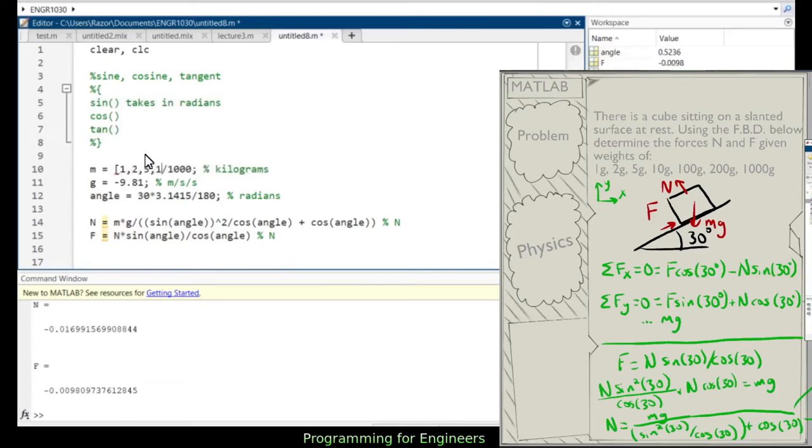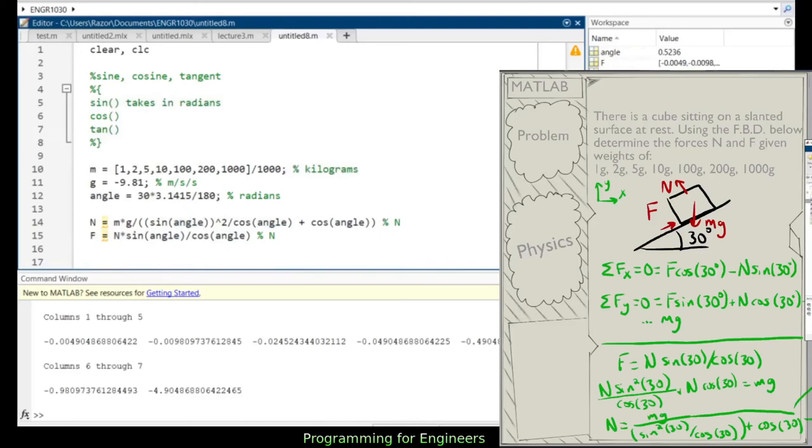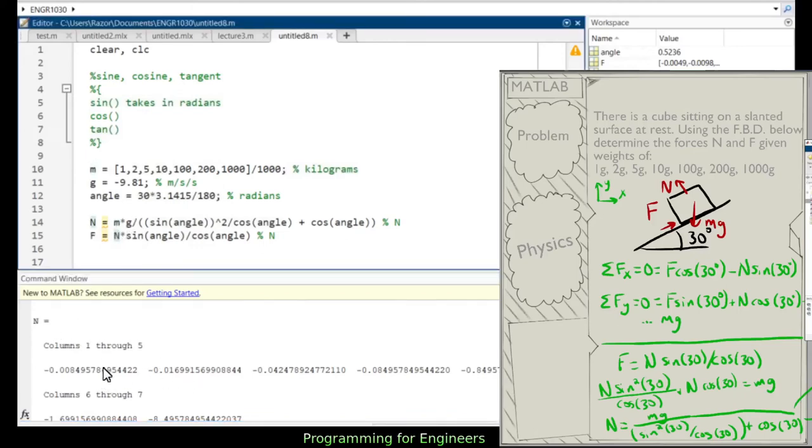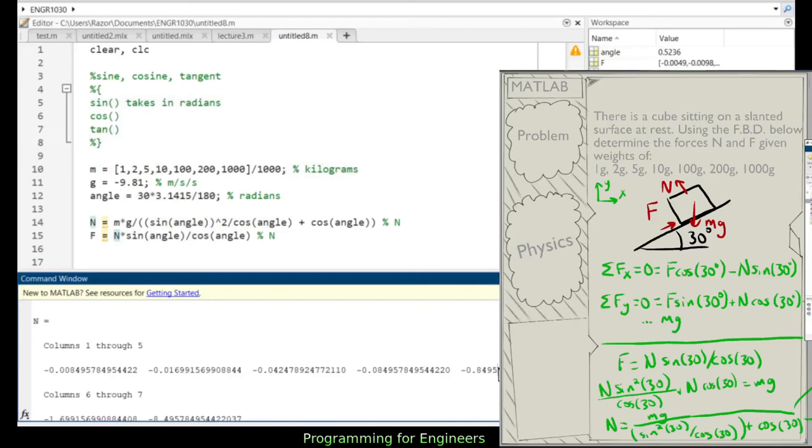One, two, five, ten, one hundred, two hundred, and one thousand, divide each of those by one thousand. So here we have all the masses. And now if we run this, we'll have a matrix, or a row vector, of N and F, giving the forces acting on the cube, the normal and friction forces, at thirty degrees. And we have it, this is for the first mass.